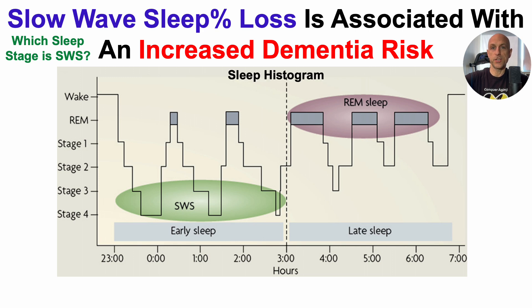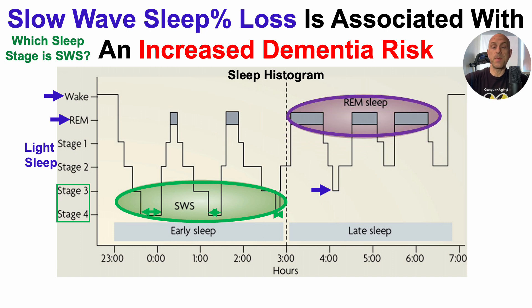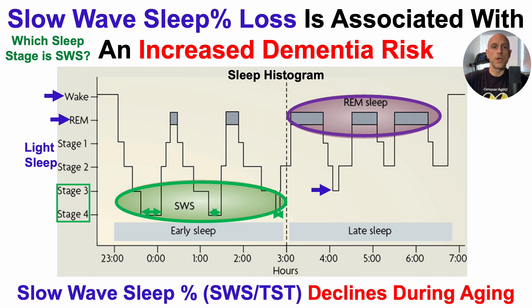This is a sleep histogram. Starting from being awake, we pass through REM sleep, then stage one and stage two sleep, which is considered light sleep. After that we go into stage three and stage four sleep, which is slow wave sleep. In the first half of the night most of the slow wave sleep happens, as you can see by the green horizontal arrows. In the second half of the night, slow wave sleep is considerably less if at all.